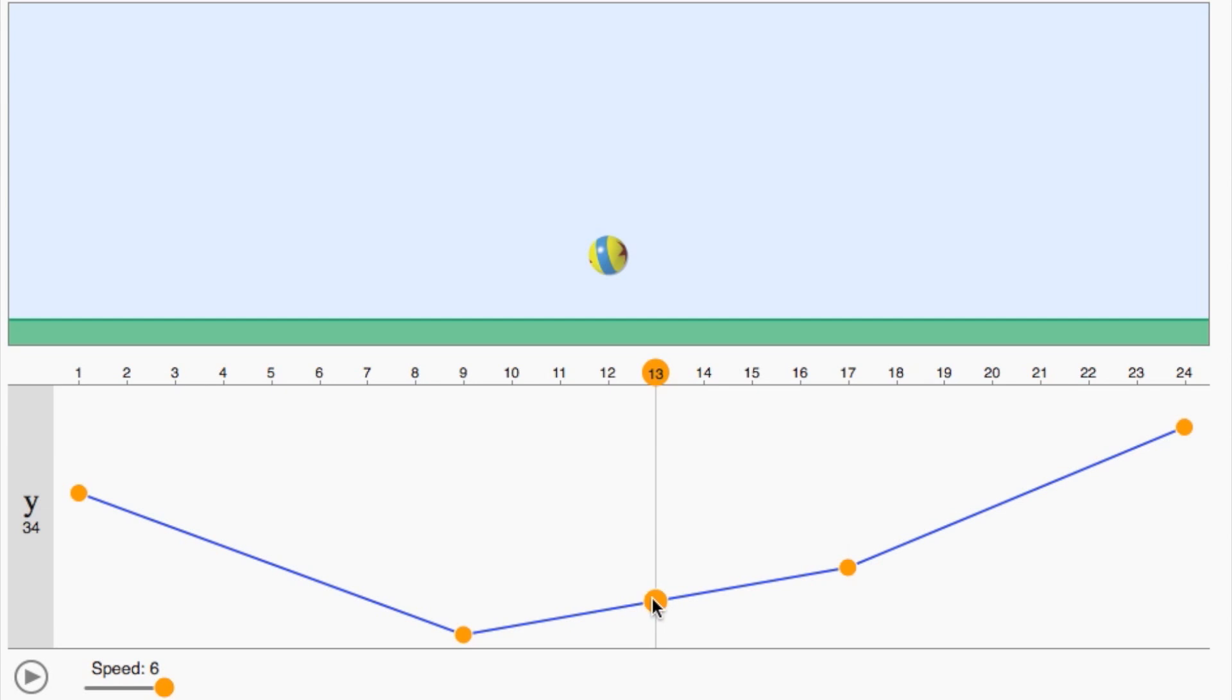Now you give it a try. See if you can animate a convincing bouncing ball using linear interpolation. And here's a hint, you can add extra keyframes in between to get the spacing that you want.